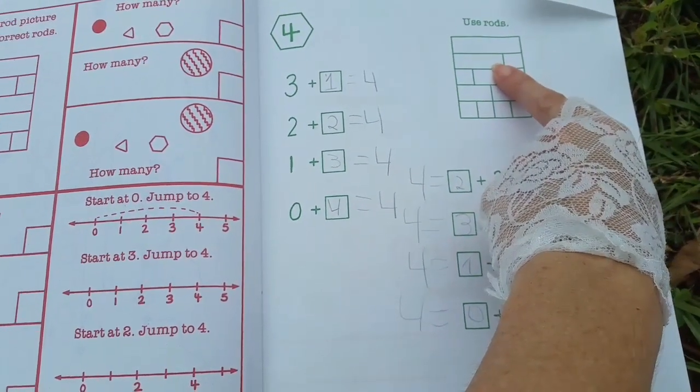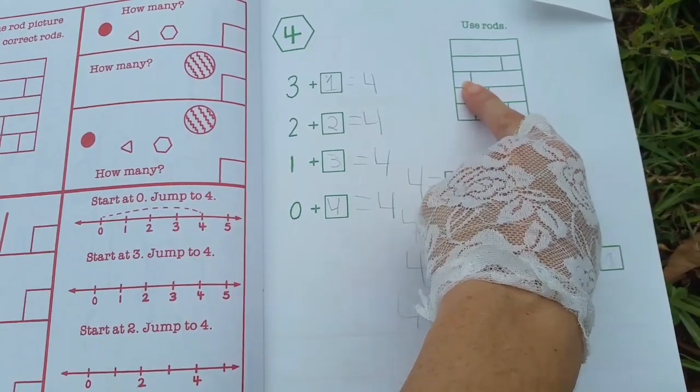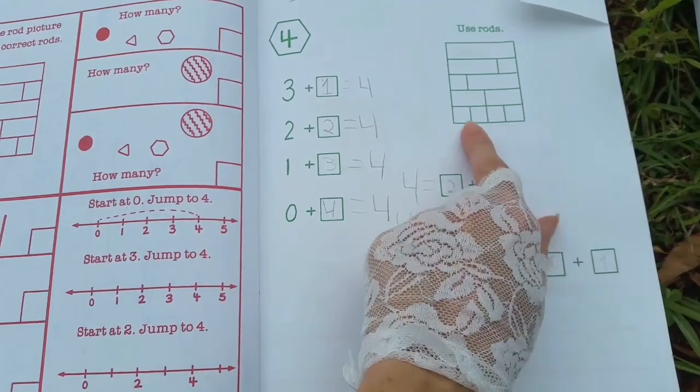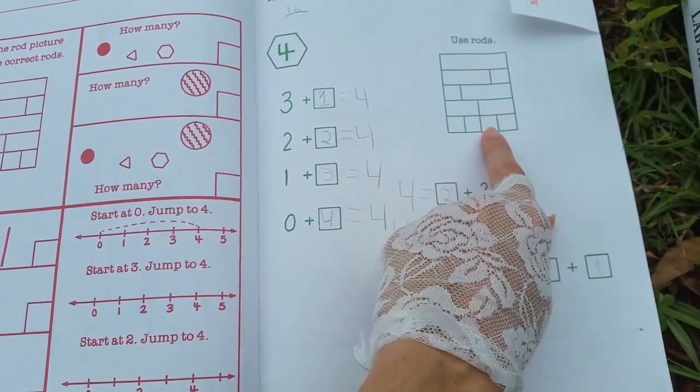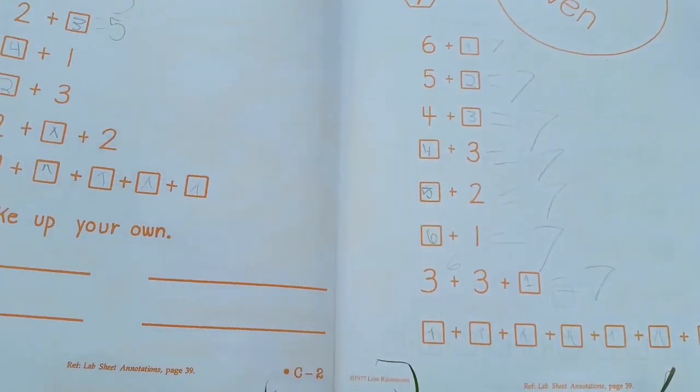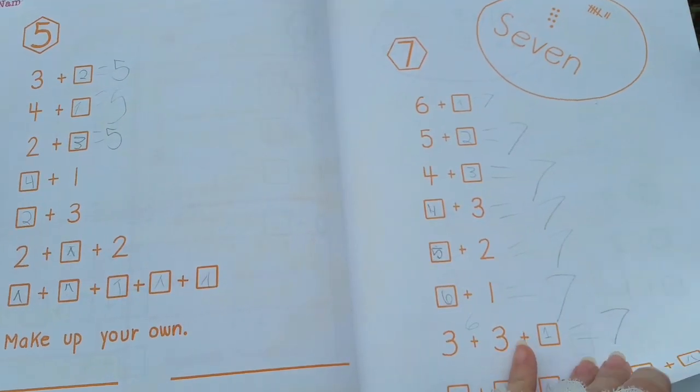So this one for instance would be the four rod and then this one for instance would be the three rod and the one rod. This would be the one rod and the three rod. This would be a two and a two and this would be a one, one, one and a one. So going back and working through this orange book has been really good.